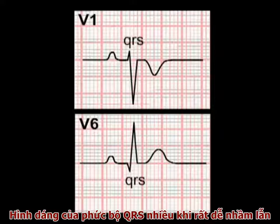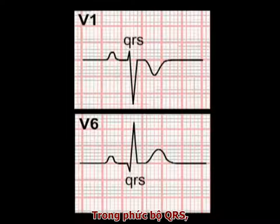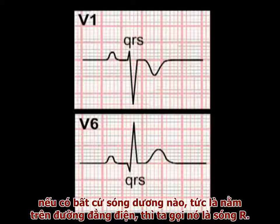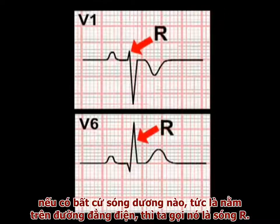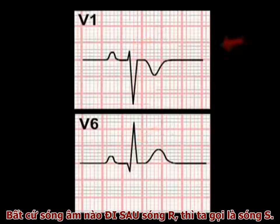The nomenclature of the QRS complex can cause some confusion, but is in fact quite straightforward. Within the QRS complex, any positive deflection — that is, a deflection above the isoelectric line — is termed an R-wave. Any negative deflection which follows an R-wave is termed an S-wave.